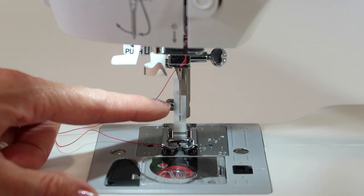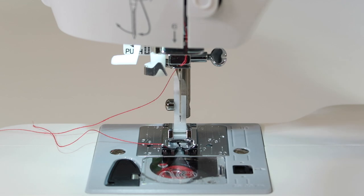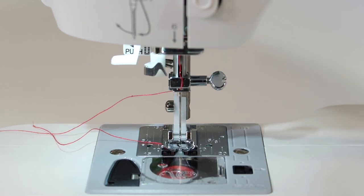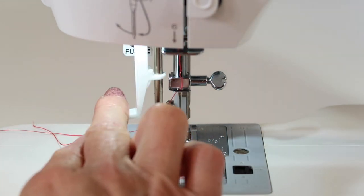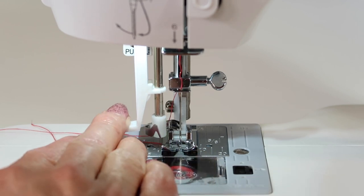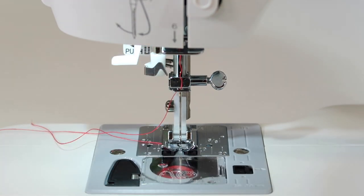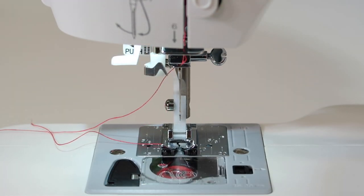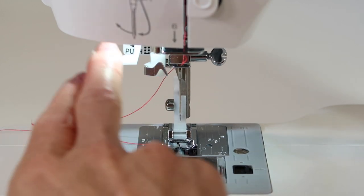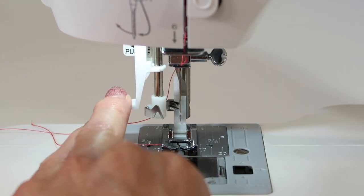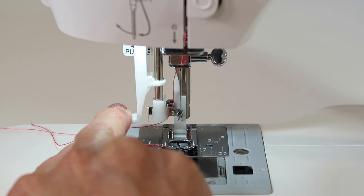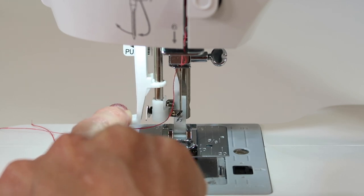The next thing you need to do is make sure your needle is high enough. If the needle is lowered and not high, the needle threader will not come down and do its thing. See how it can't get around it? Bring that needle up as high as it will go, and then you'll notice that when I push down, the head will swivel and go around the needle.